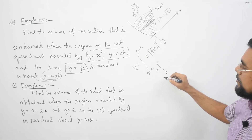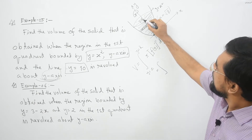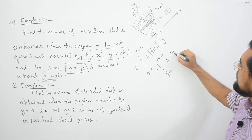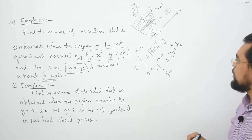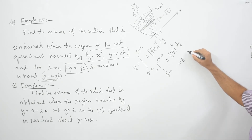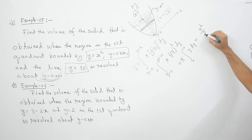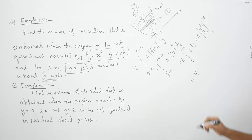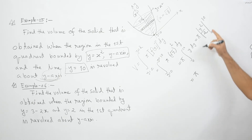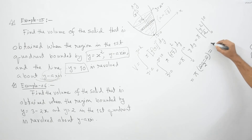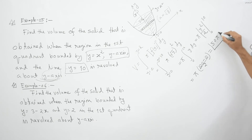So y starts at y equal to 0 and ends at y equal to 10. Integrating from 0 to 10: π times (√y)² dy, which equals π times [y²/2] from 0 to 10. So 10 squared means 100; 100 minus 0, divided by 2, which equals 50π. This is the volume of this solid material.